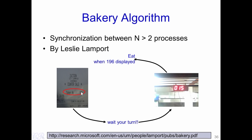In some bakeries, when we enter we are given a particular token with a number on it — for instance, token number 196. We need to wait until the token number 196 is called out on a display which periodically shows a token number. When 196 is displayed, you are able to get your food from the bakery.